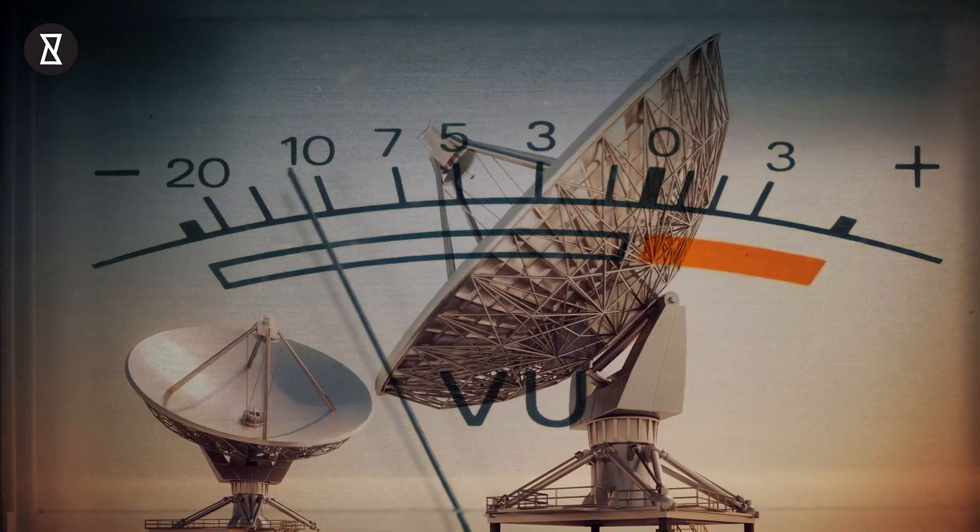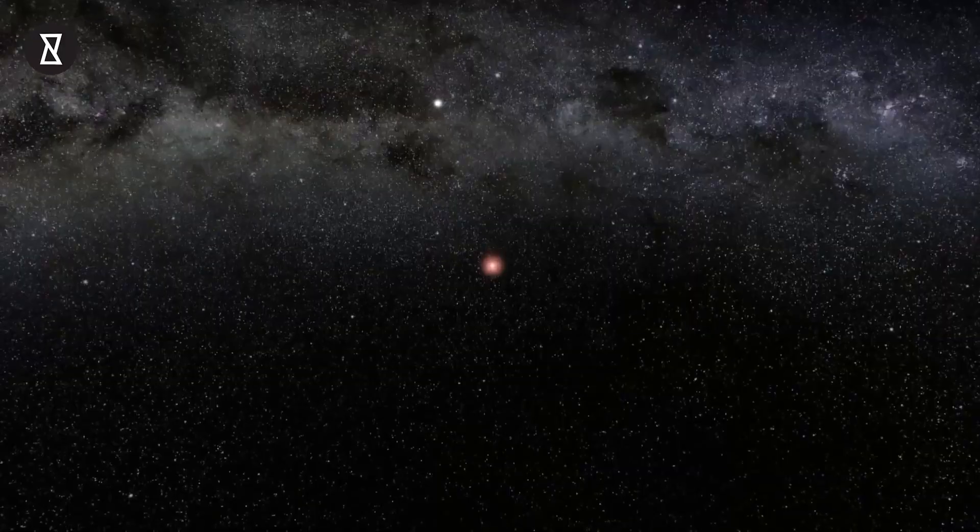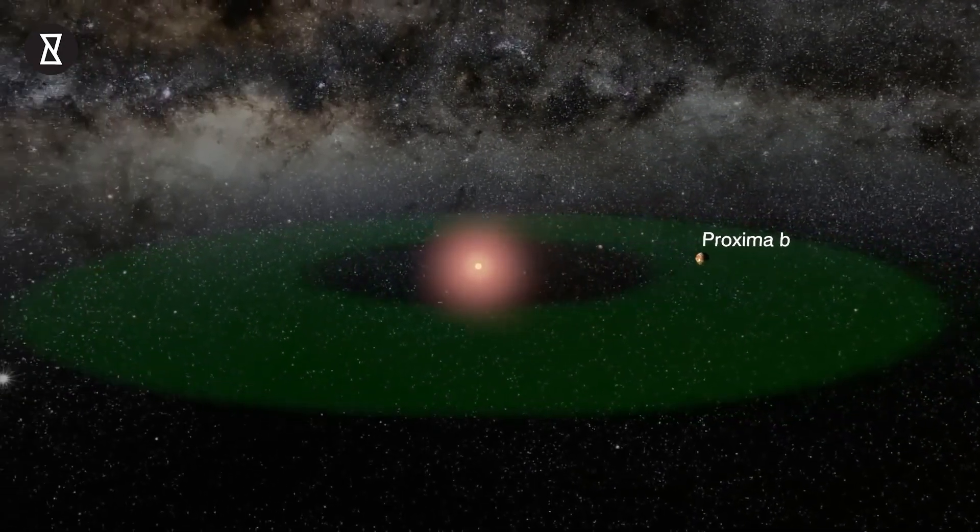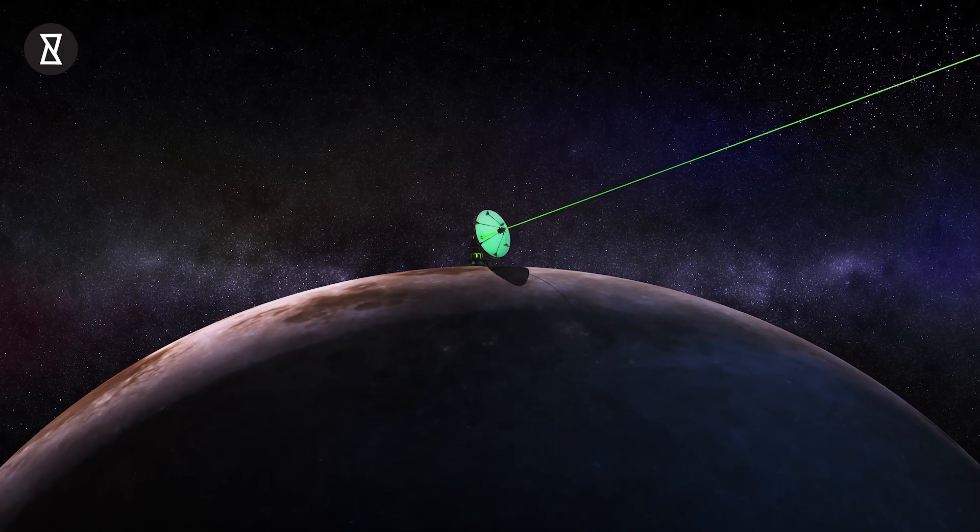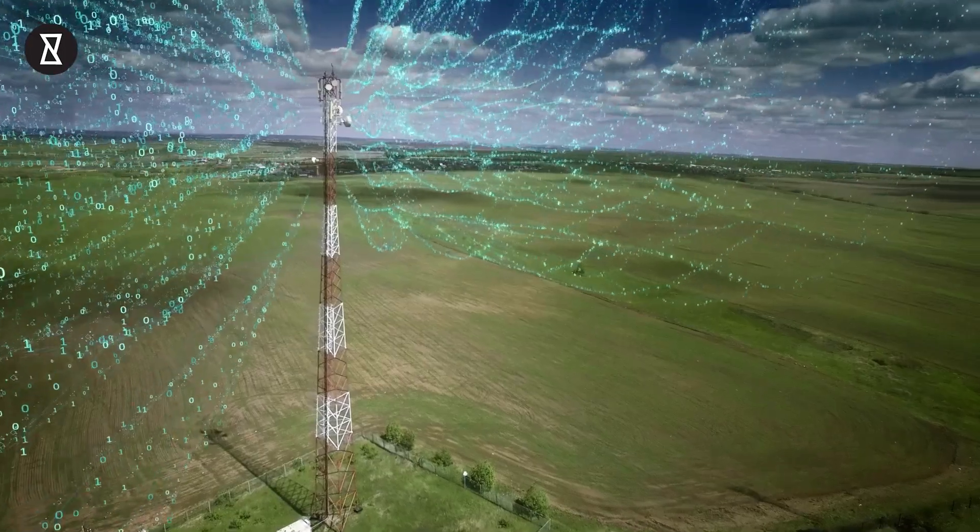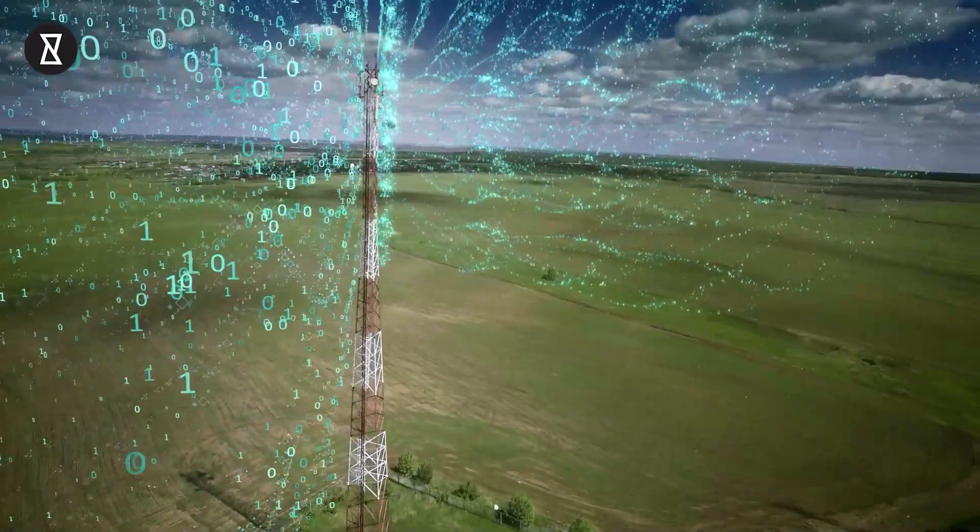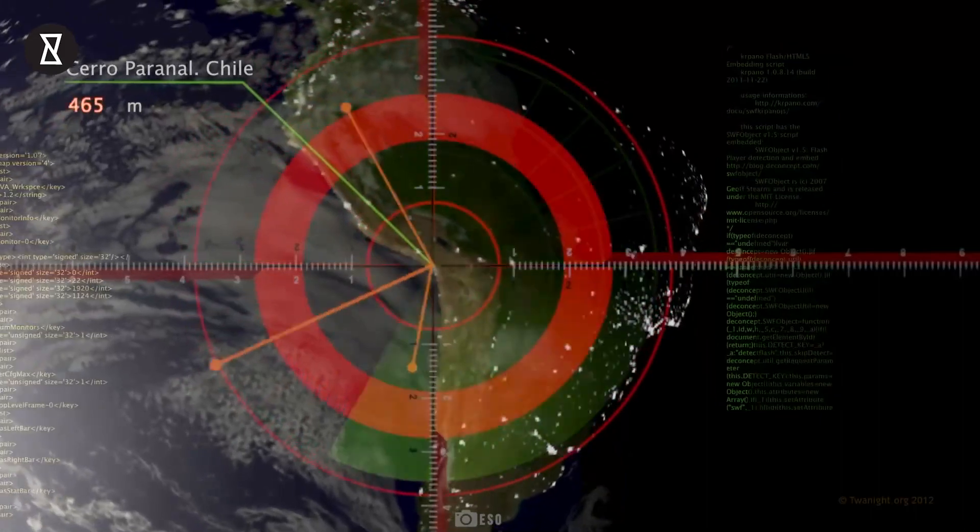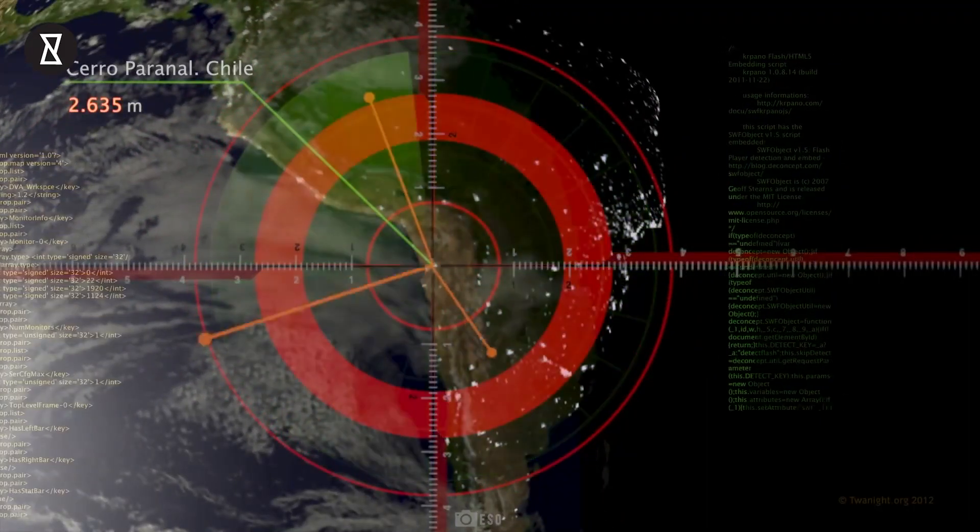Since then, we have detected countless radio signals coming from several directions. One of them came from the direction of Proxima Centauri, raising hopes in the hearts of several people that an alien civilization from our nearest star was trying to contact us. It turned out that the radio waves were created by human-made technological anomalies. Likewise, many signals detected over the years have a natural explanation. Until now.